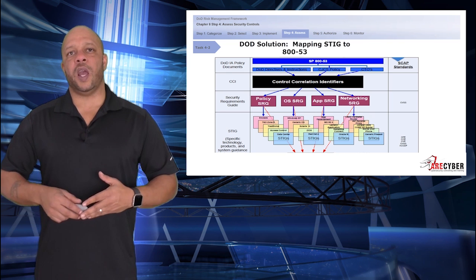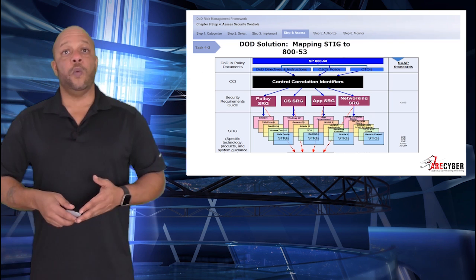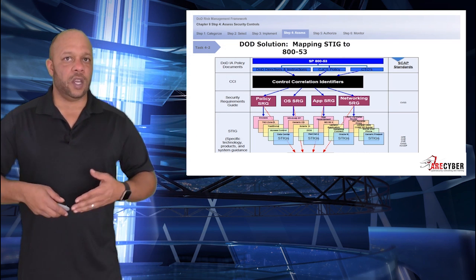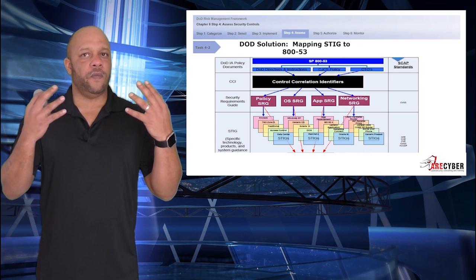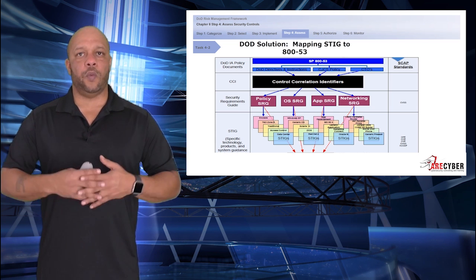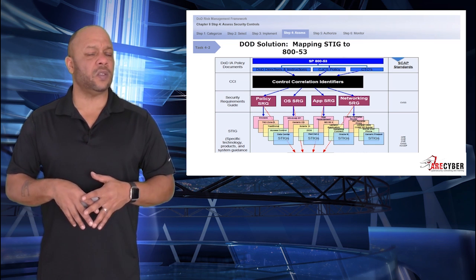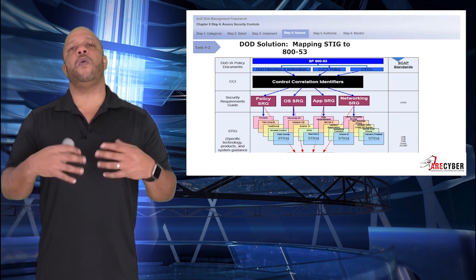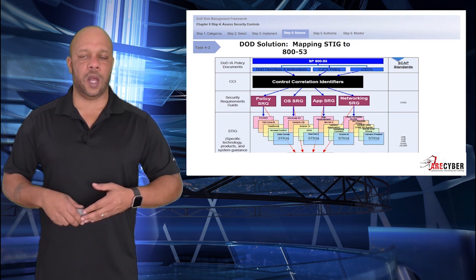Here is an overall mapping of how the STIG overlay and correlates with the 853 base controls. You can see the CCIs sitting right in between: the high-level 853 at the top, the mid-level policies, standards, and CNSS 1253 in the middle, and then the control identifiers correlating to an individual system or technology STIG.